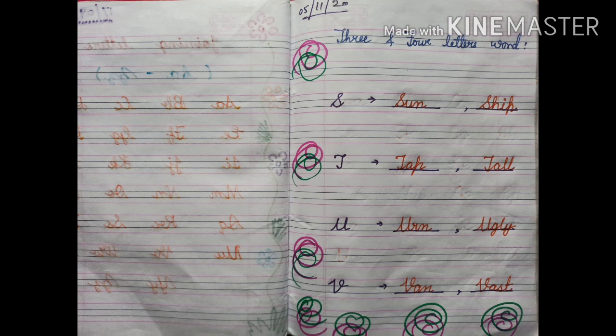U-R-N, Urn. U-G-L-Y, Ugly. V-A-N, Van. V-A-S-T, Vast.